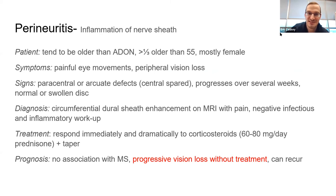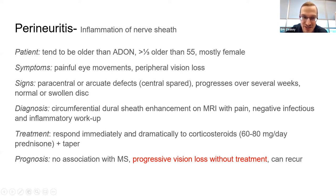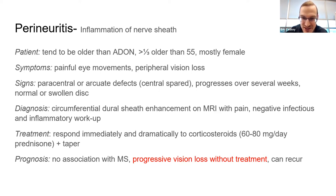Perineuritis is another painful eye movement entity. You do typically get visual field loss but not to the degree of optic neuritis. You definitely need to treat with steroids — if MRI shows dural sheath enhancement around the nerve, treat with steroids and it should respond quite rapidly.